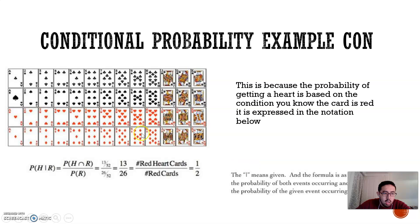Now, here's the formula. Probability of H given R. What this means is the probability of H and R—it's a heart and it's red because it has to be both. A heart must be red. It's 13 out of 52, divided by the probability that it's red, which is 26 out of 52.